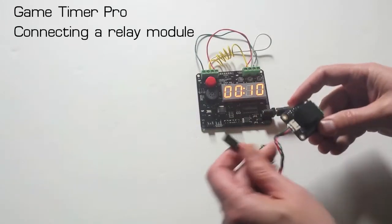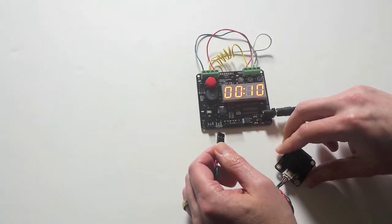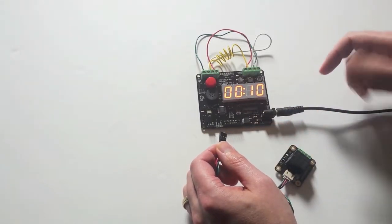In this video I'm going to show you how to connect a relay to the GameTimer Pro so that you can trigger external devices on detonation or on defuse.